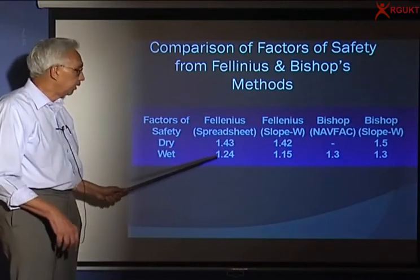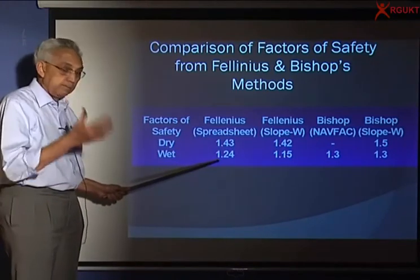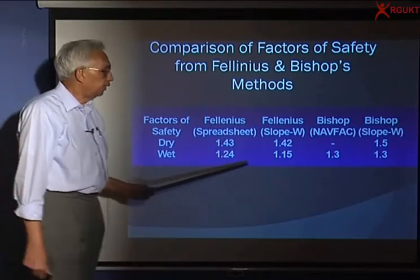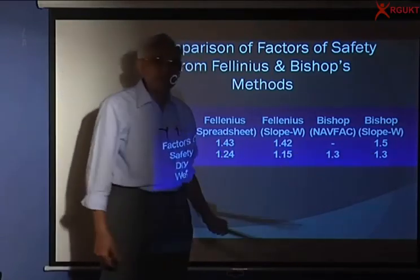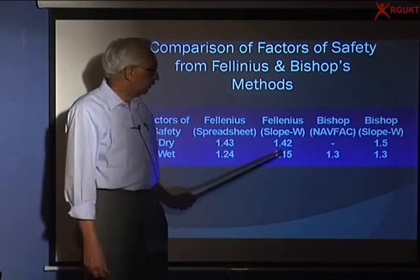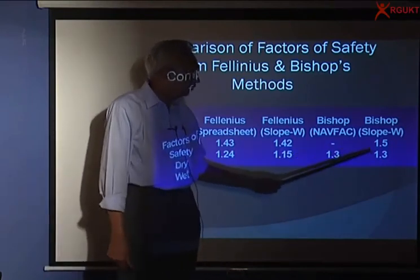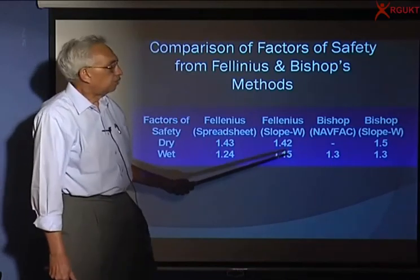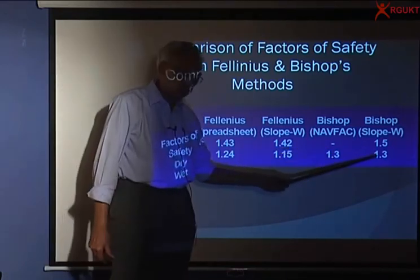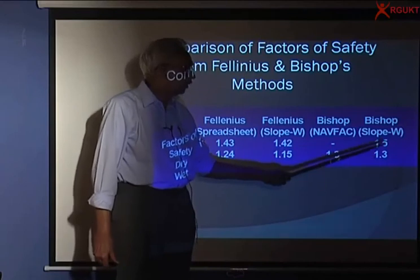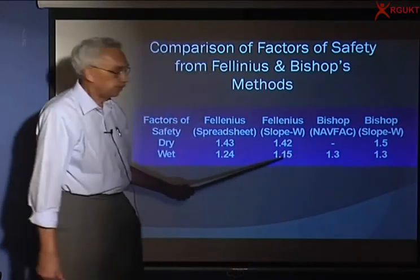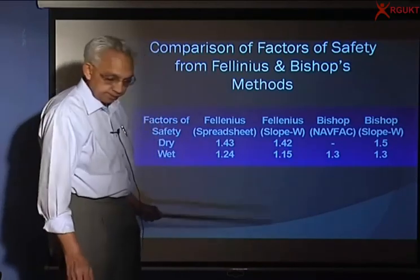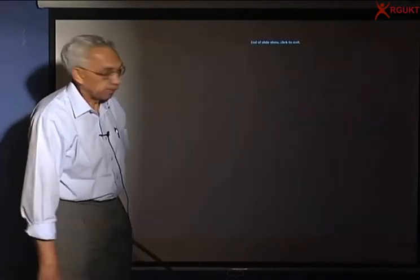But once slope has become wet, saturated with pore pressure, the factor of safety drops down, but then the Bishop's method definitely gives you a higher value. If you didn't use modified Bishop's method, you would have predicted 1.15, but the actual slope factor of safety is 1.3. This is more safe than this one. So you can feel more confident that you have used a better method. Okay.